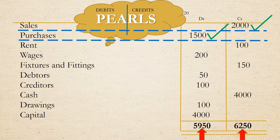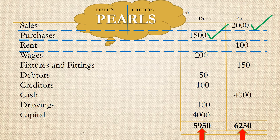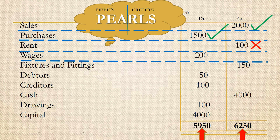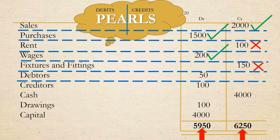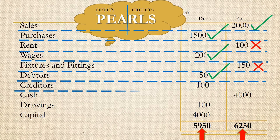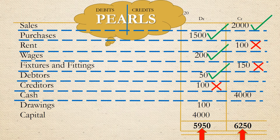Rent is an expense and all expenses are debited, therefore this entry is incorrect. Wages are also an expense and the balance has been debited, making this entry correct. Fixtures and fittings are fixed assets and all assets are debited, therefore this entry is incorrect. Debtors are current assets so this entry is correct. Creditors are short-term liabilities and all liabilities have a credit balance, therefore this is an incorrect entry. Cash is a current asset, making the entry incorrect.